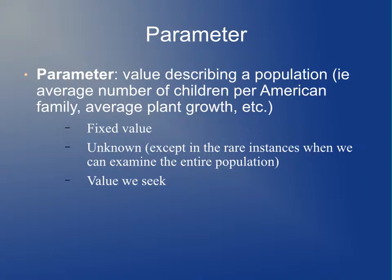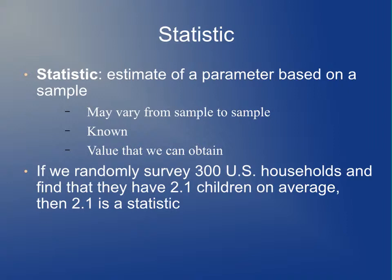In general, it's unknown. In principle we could calculate this, but in practice it would be prohibitively expensive at best and probably completely impossible. So except in very rare cases where we can examine the entire population, it's unknown. A statistic is an estimate of a parameter based on a sample, and it's going to vary from sample to sample, but the good thing is that we can measure it. If we survey 300 U.S. households and find they have 2.1 children on average, then 2.1 would be a statistic. Obviously it's not the same as the true population parameter, but we hope that it's going to be fairly close.